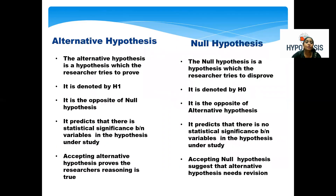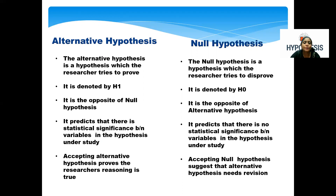Let us see what is alternative hypothesis and how to formulate it. The alternative hypothesis is a hypothesis which the researcher tries to prove. It is the opposite of the null hypothesis. Alternative hypothesis predicts that there is a statistically significant difference between variables in the hypothesis under study. Accepting the alternative hypothesis proves that the researcher's reasoning is true, whereas the null hypothesis is just the opposite.